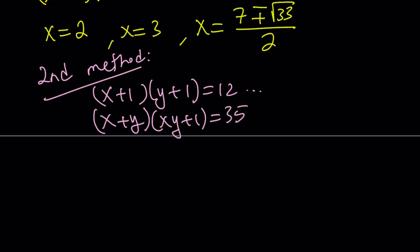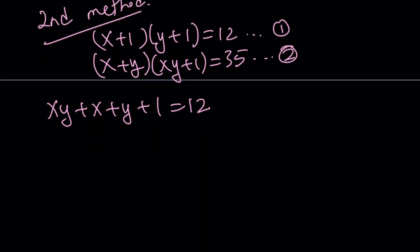So I basically numbered these equations, 1 and 2. I'm going to go ahead and distribute number 1. And this gives me xy + x + y + 1 = 12. If you subtract 1 from both sides, you get xy + x + y = 11.